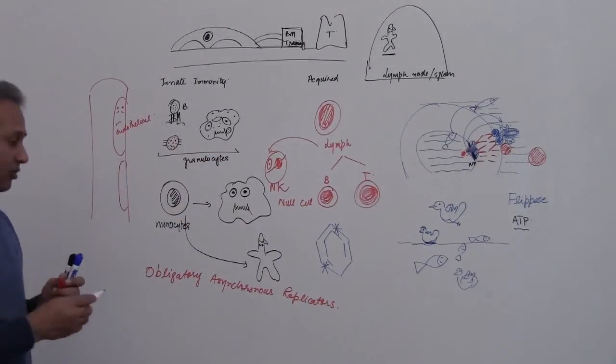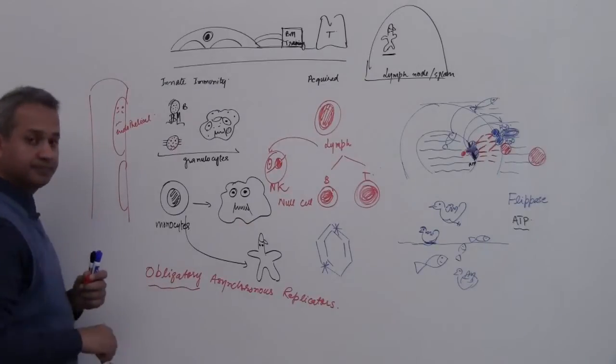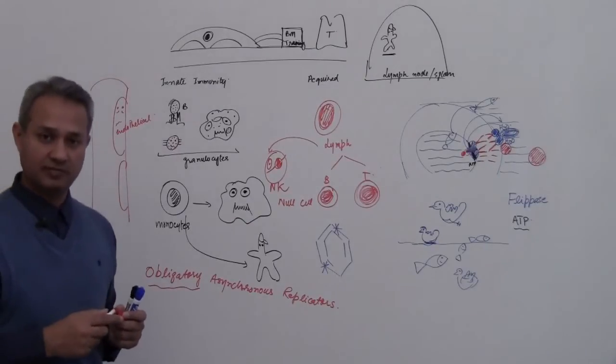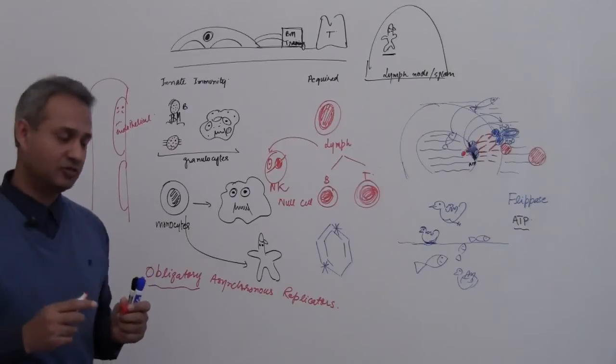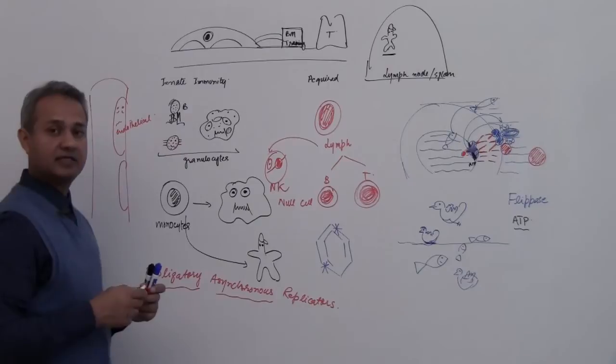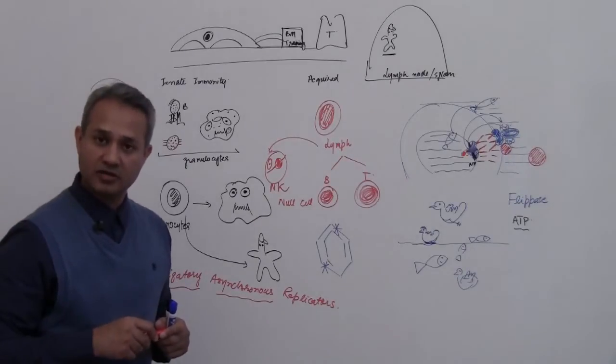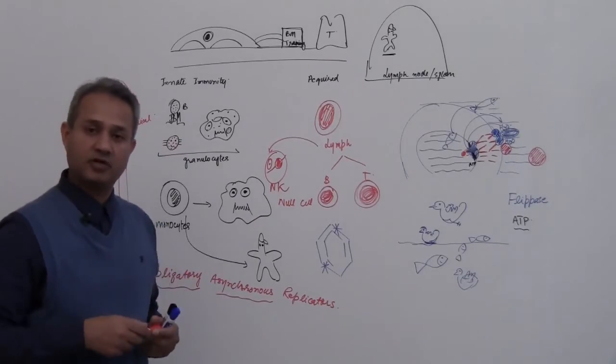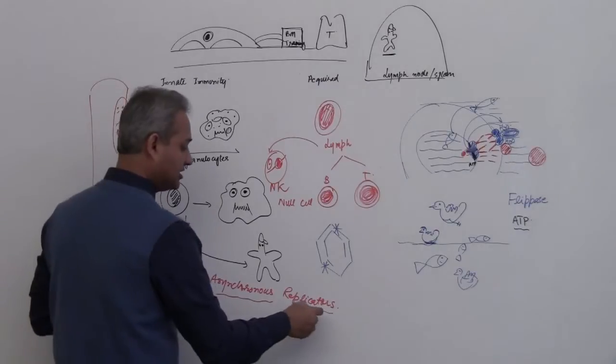So once again, obligatory means they must do something, they are obliged to do it. Asynchronous - synchronous means similar, asynchronous means dissimilar. Replicators means division.